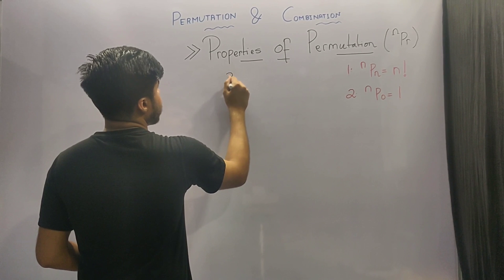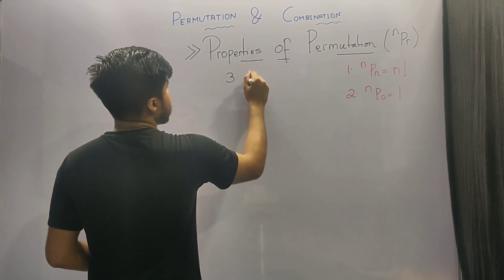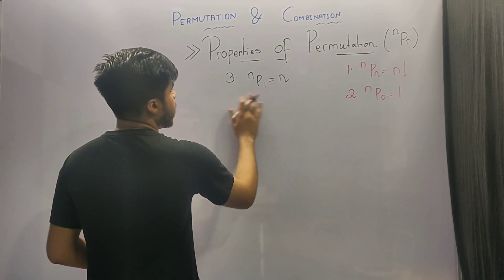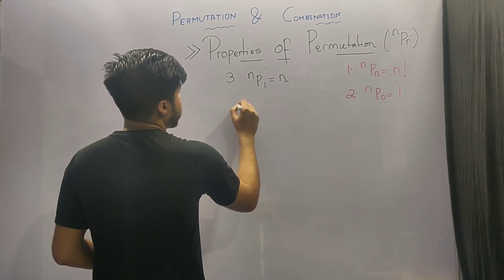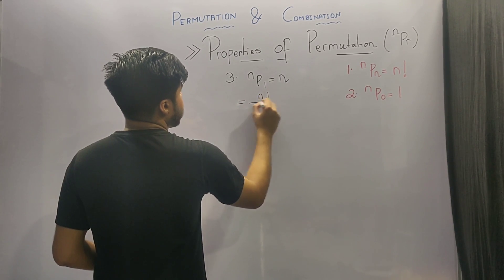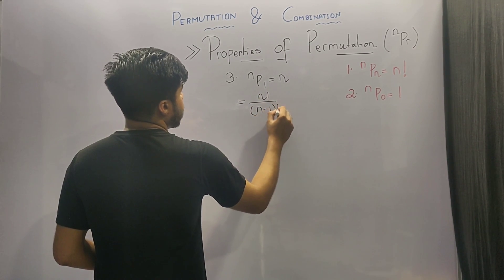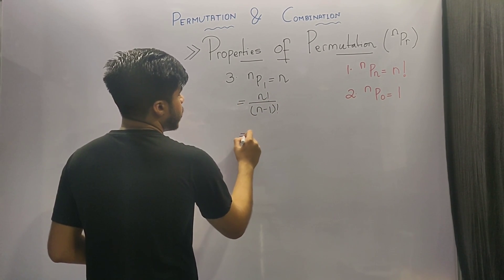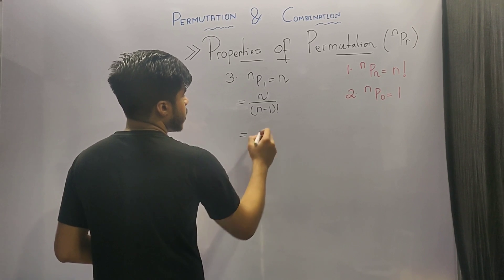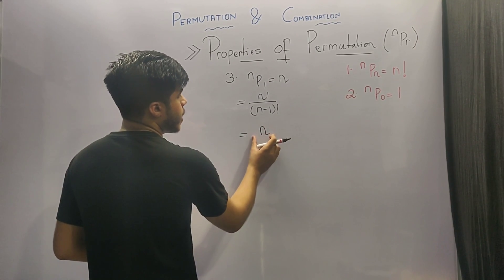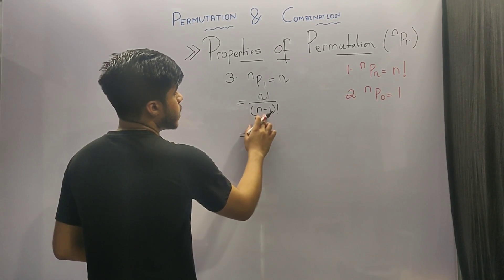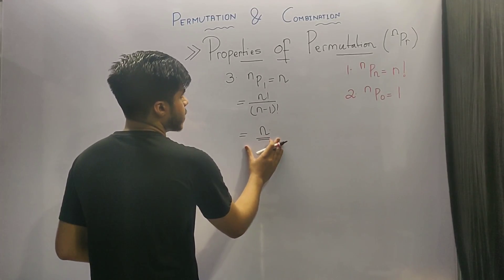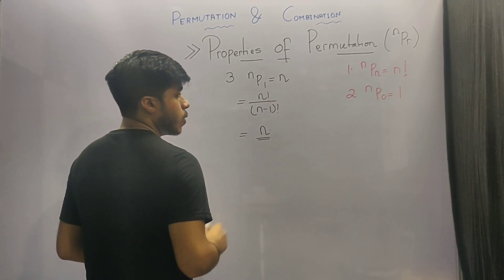The third property of permutation says that nP1 is equivalent to n. Putting it in the formula of nPr we get n factorial upon n minus 1 factorial. This is of the form n factorial by r factorial, which is the product of all numbers from n down to r plus 1. Here r plus 1 equals n, so the final answer is only n. So nP1 is equal to n.